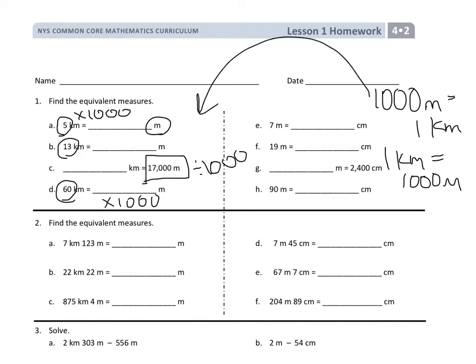For problem 2, they need to know that 100 centimeters equals 1 meter, or 1 meter equals 100 centimeters. So if they have 7 meters, they're going to have to times that by 100 to figure out how many centimeters they have. So they're going to do that in E.